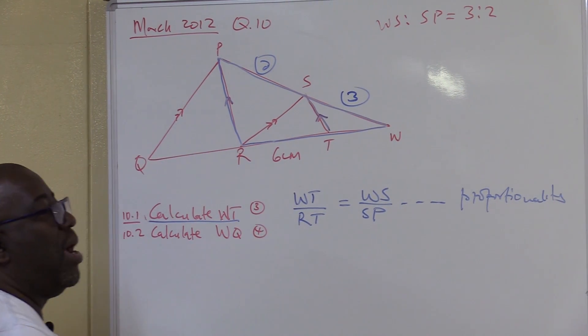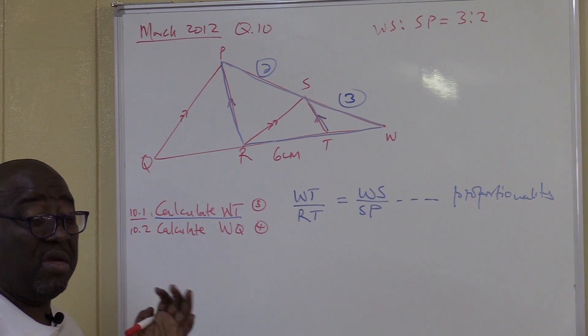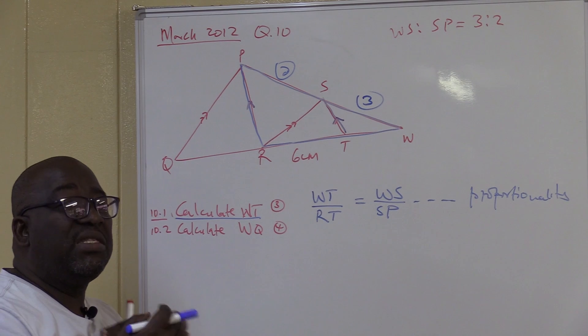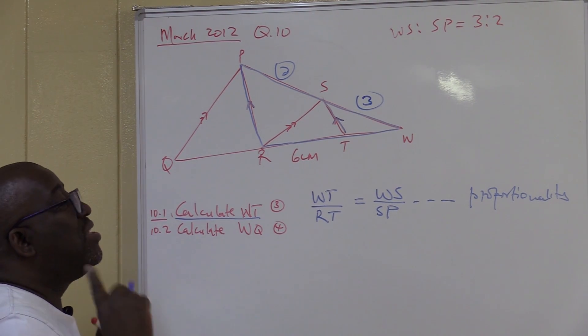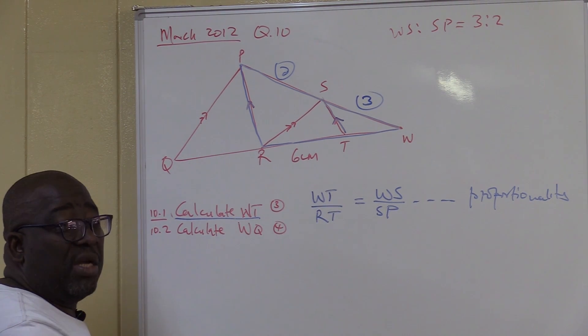In other words, I'm avoiding to write the whole theorem. I just say proportionality theorem, but I know what the theorem says. It says a line drawn parallel to one side of a triangle divides the other two sides proportionally. What is it that we're looking for? We're looking for WT. So WT, we must make it the subject.